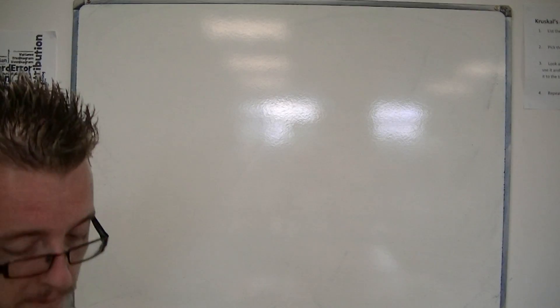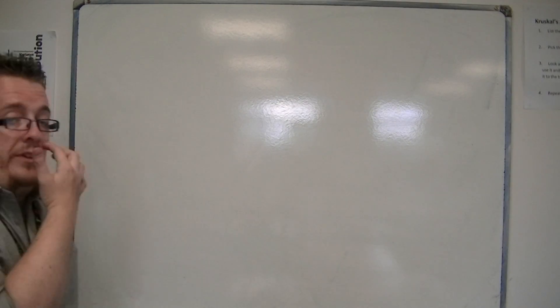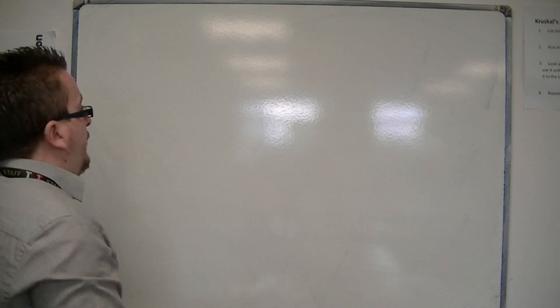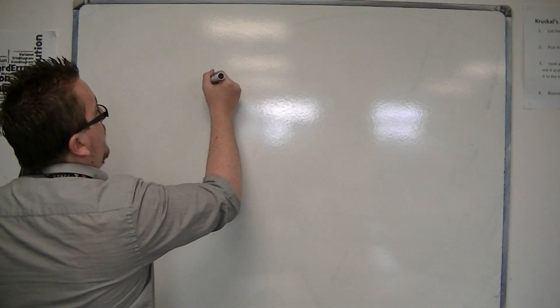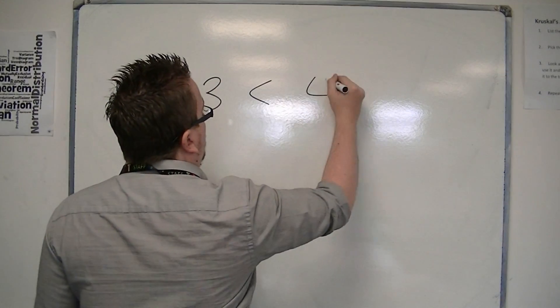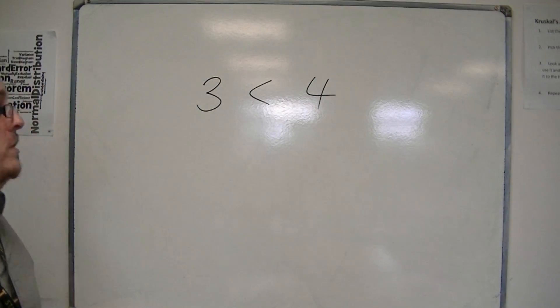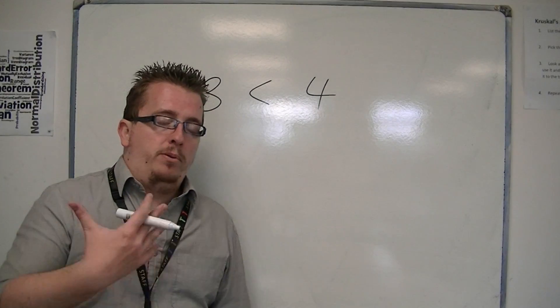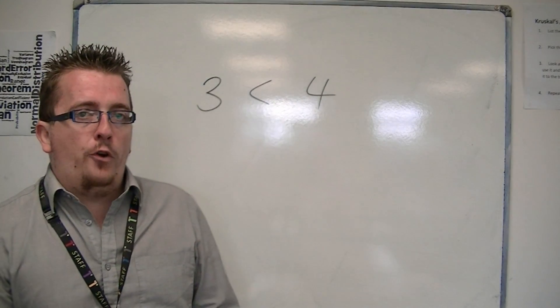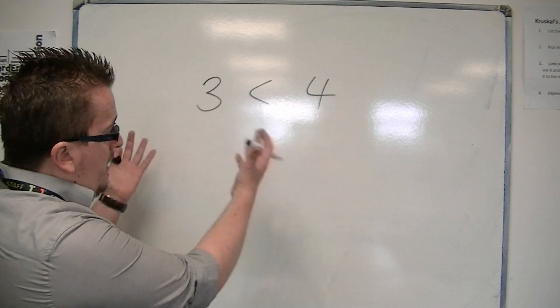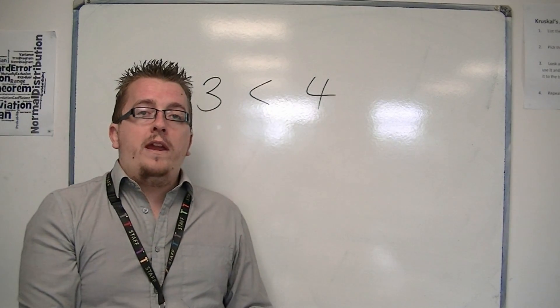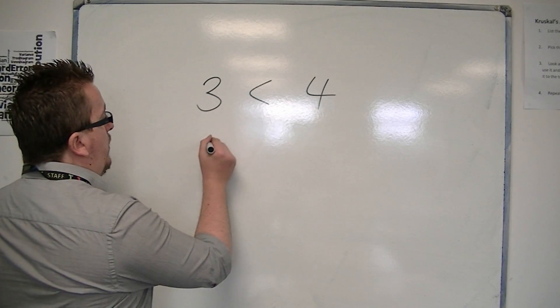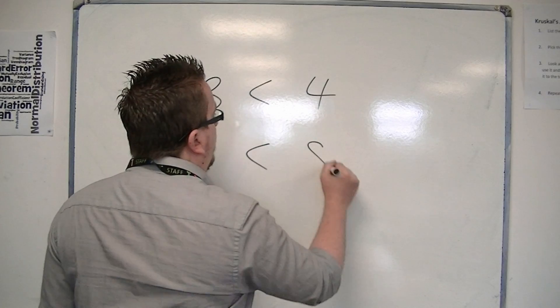There's also the fact that when we deal with inequality symbols in an equation format, if I just say something like 3 is less than 4, which we all agree with, then if you multiply both sides of the inequality with a number, so let's say multiply both sides by 2, we would get 6 is less than 8.